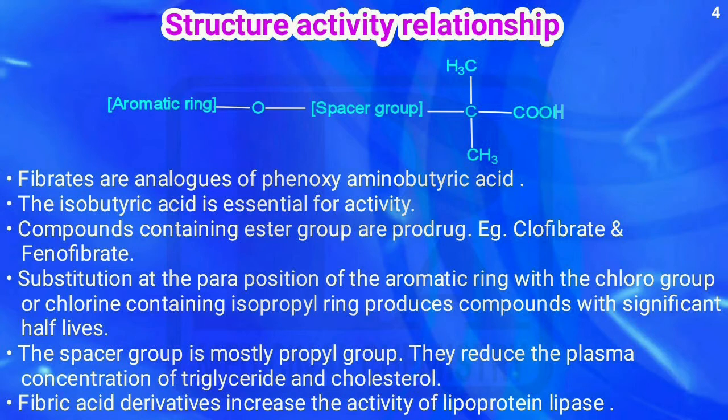The general structure of fibric acid derivatives: an aromatic ring connected to oxygen, a spacer group, one carbon having two methyls with a COO group — the isobutyric acid moiety — which is essential for activity. If the compounds have an ester instead of an acid, those compounds are considered prodrugs. Examples are clofibrate and fenofibrate, both ending in '-ate' indicating an ester.